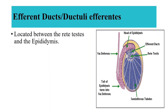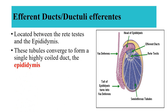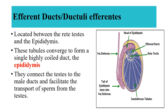The efferent ducts, or ductuli efferentes, are located between the rete testis and the epididymis. These tubules converge to form a single highly coiled duct — the epididymis. They connect the testis to the male ducts and facilitate the transport of sperm from the testis.